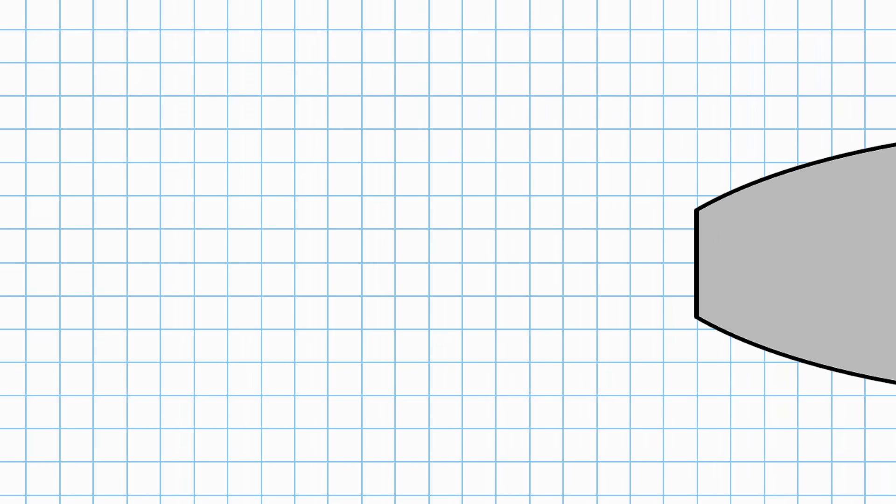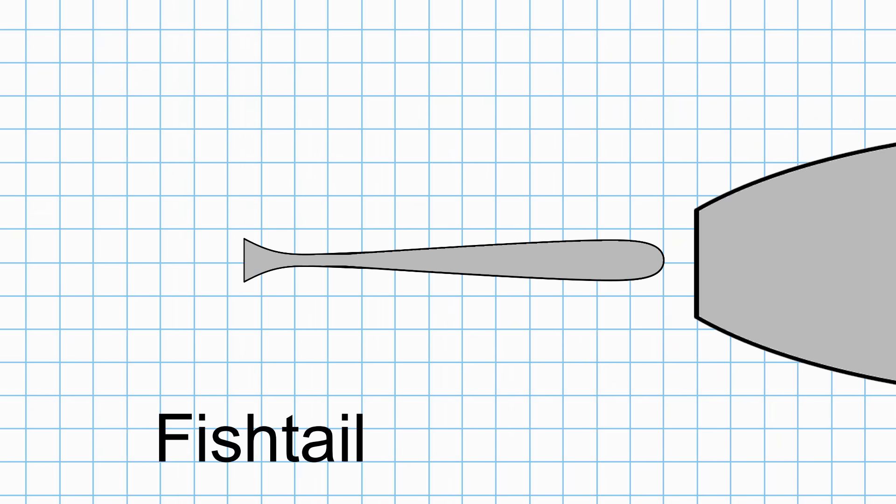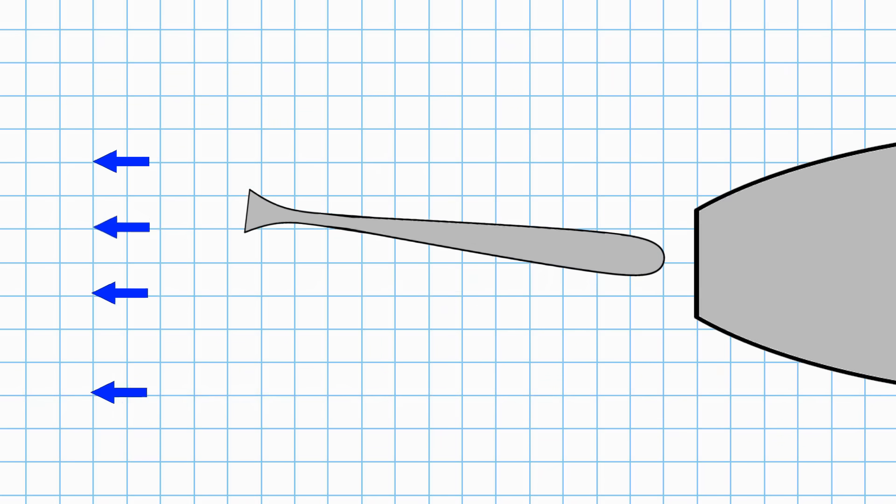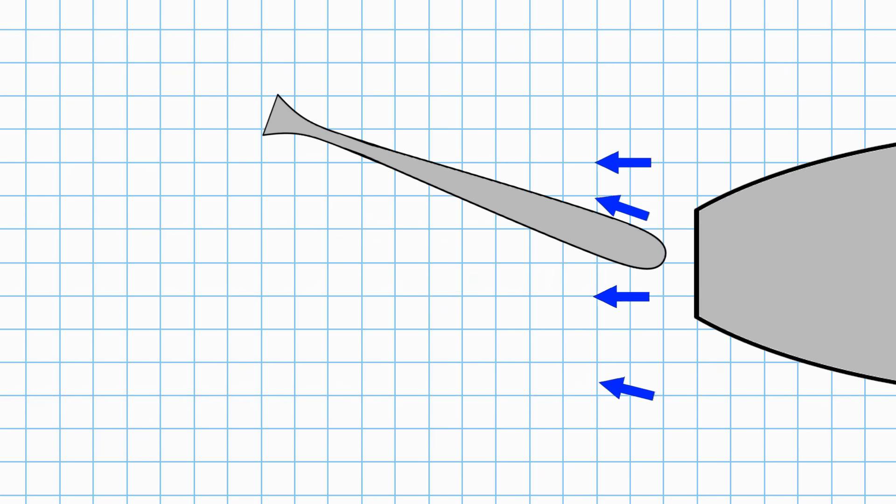This time we're going to add an additional flare at the end. We call this a fishtail or a Schilling rudder. They're used a lot on ships to improve maneuverability at slower speeds. Again, the water flows evenly around the rudder when it's amidships. This time when we turn the rudder, we can see the additional water deflection.